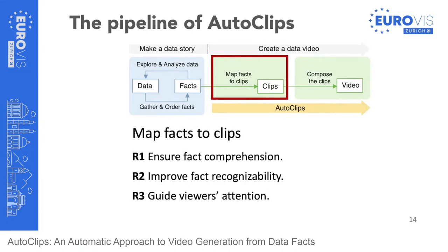Given the data facts, AutoClips first maps each data fact to potential video clips. We derive three design requirements: first, a clip should communicate the corresponding data facts clearly and effectively; second, a clip should be distinguishable from clips designed for other fact types; third, a clip should use animation properly to guide viewer attention and facilitate data perception.